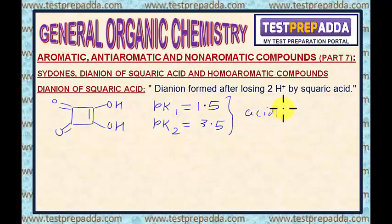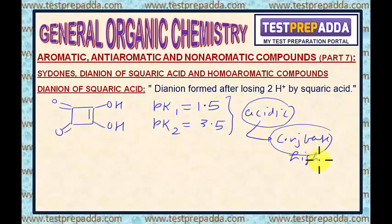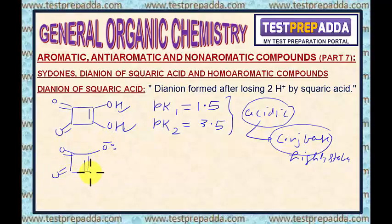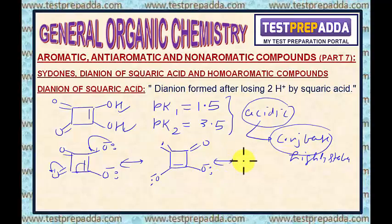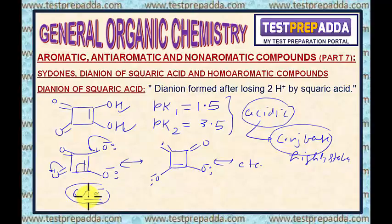Such low values of pKa mean it is highly acidic in nature, which means the conjugate base must be highly stable. If I write the conjugate base by removing these two hydrogen atoms, it will be like this. This is the di-anion of squaric acid. And if I write the resonating structures here, similarly other resonating structures can be written. You can see aromaticity is there because of 6 pi electrons — a loop of 6 pi electrons. This is about the di-anion of squaric acid.